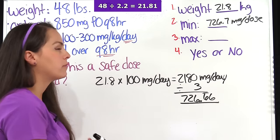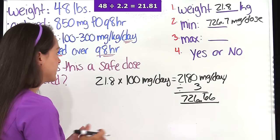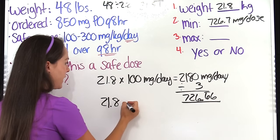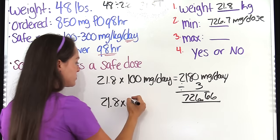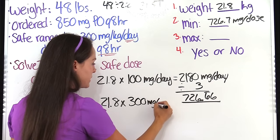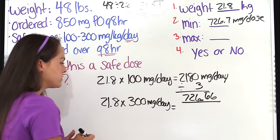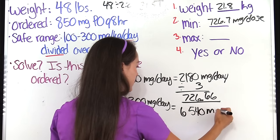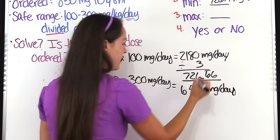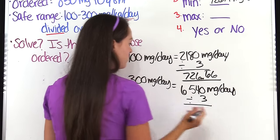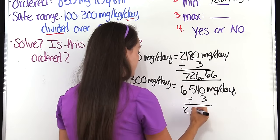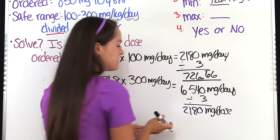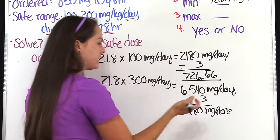Now let's solve for the maximum amount. We take the patient's weight — 21.8 kilograms — and multiply by the maximum range of 300 milligrams per day. That gives us 6,540 milligrams per day. We divide that by 3, and that gives us 2,180 milligrams per dose. That is the maximum they can have per dose.